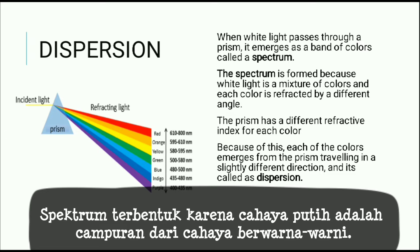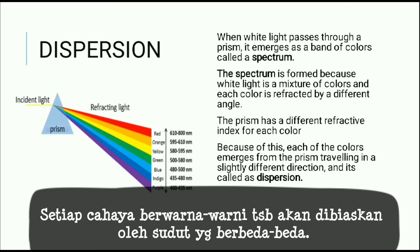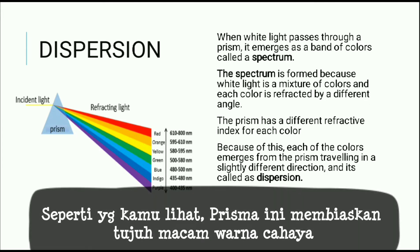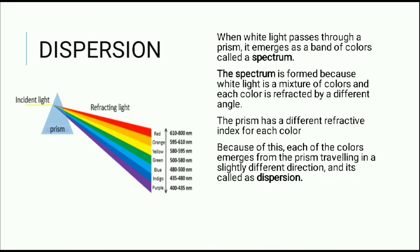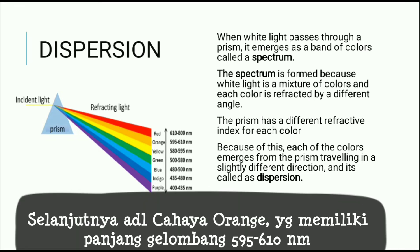The spectrum is formed because white light is actually a mixture of colors, and each color is refracted at a different angle. As you can see in the prism, it produces seven bands of colors. The biggest wavelength is red, which is 610 to 800 nanometers. Next is orange, which is 595 to 610 nanometers.